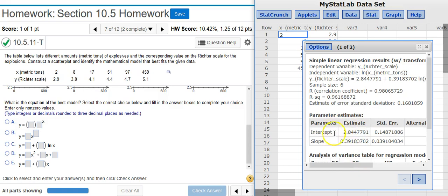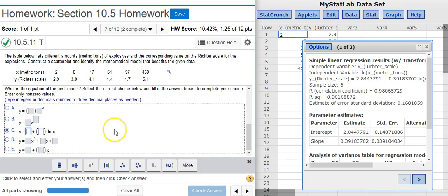For the logarithmic model, I simply take the intercept and slope right off the parameter estimates table and stick them into the model. The general form for a logarithmic model is this one right here. So I select that and then put in my numbers to three decimal places.